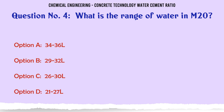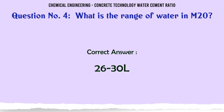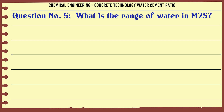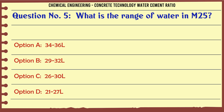What is the range of water in M20? A. 34–36 L, B. 29–32 L, C. 26–30 L, D. 21–27 L. What is the range of water in M25? A. 34–36 L, B. 29–32 L, C. 26–30 L, D. 21–27 L. The correct answer is 21–27 L.